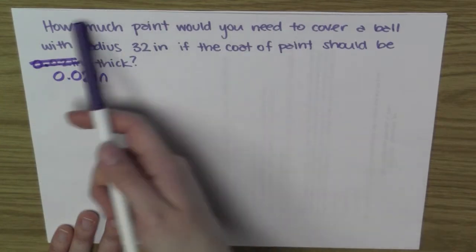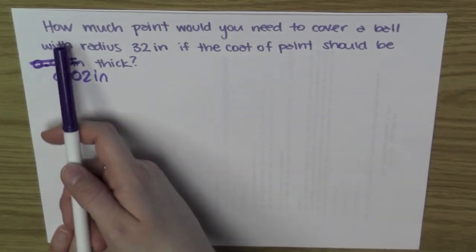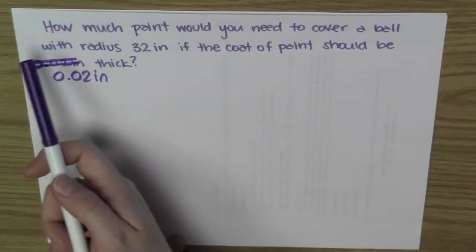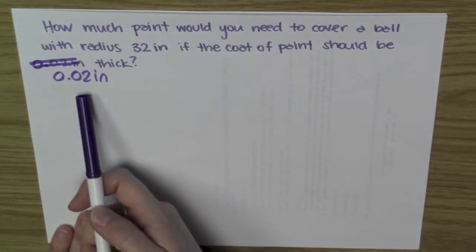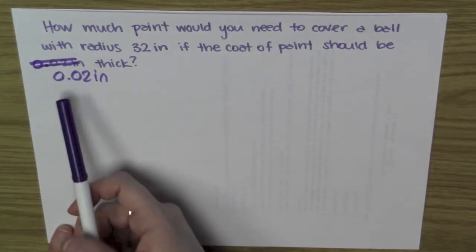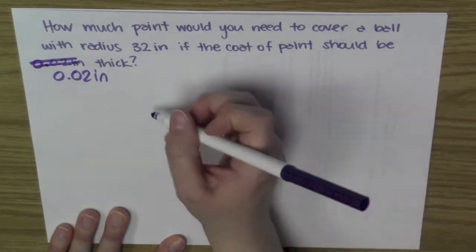This is telling me how much paint will I need. The change in volume is how much I added because of the paint, and the change in the radius is this 0.02 inches. So I'm really asking exactly the same question.